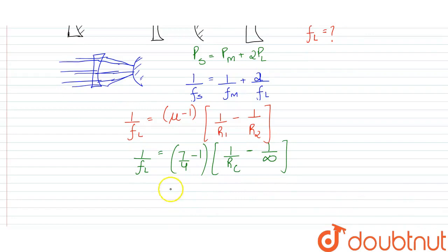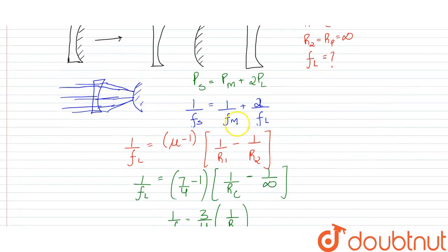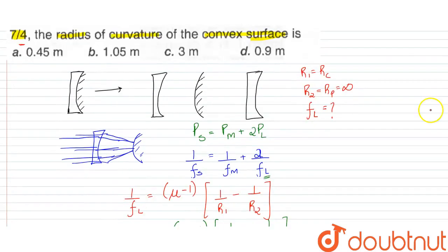Substituting values: 1/f_L = (7/4 - 1)(1/R_c - 1/∞) = (3/4)(1/R_c) = 3/(4R_c). This gives us 1/f_L for the lens.